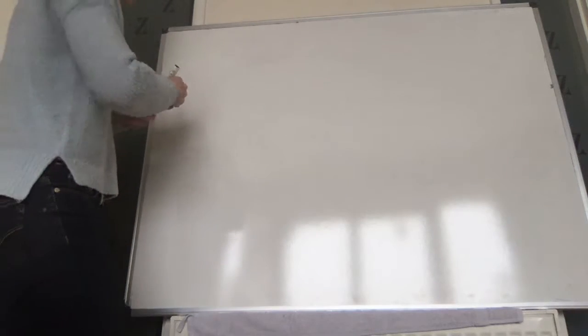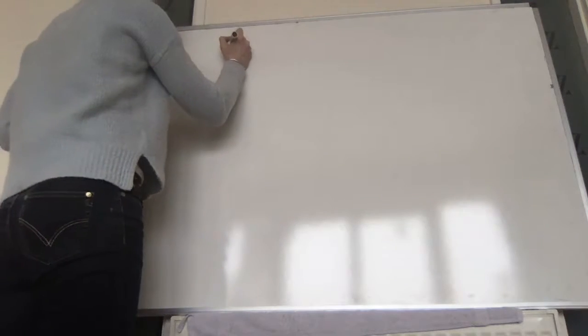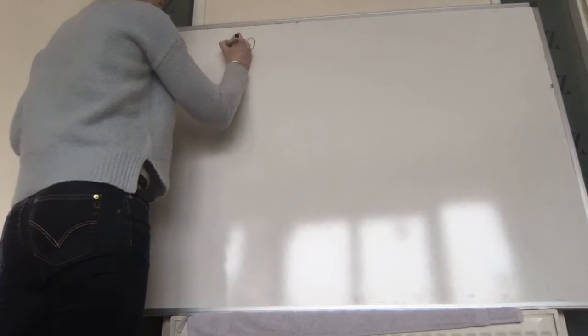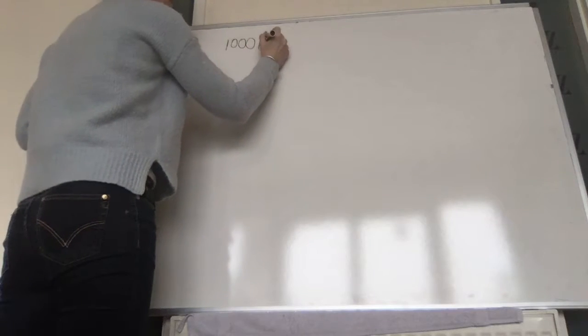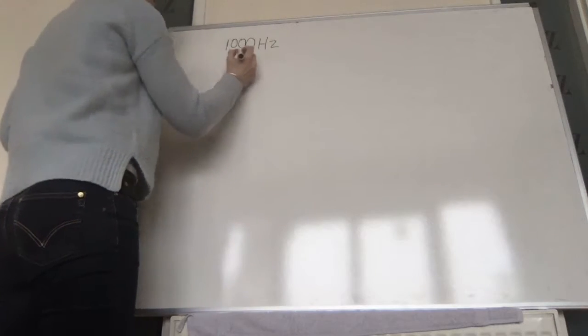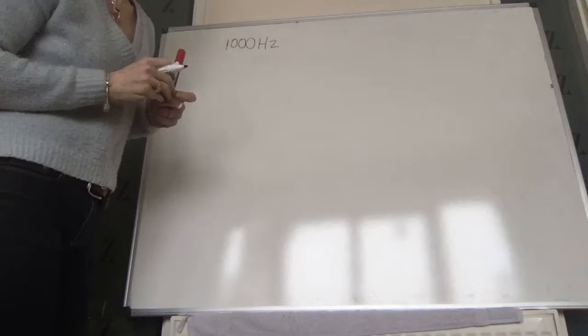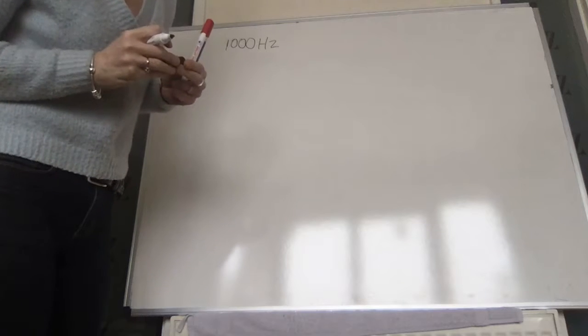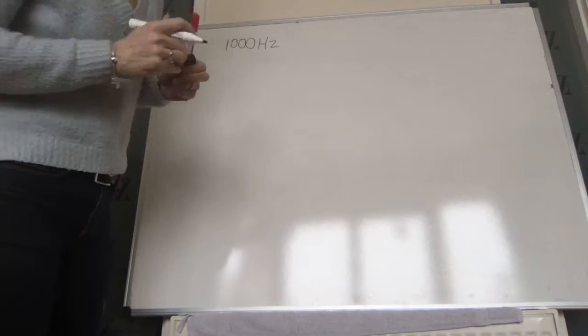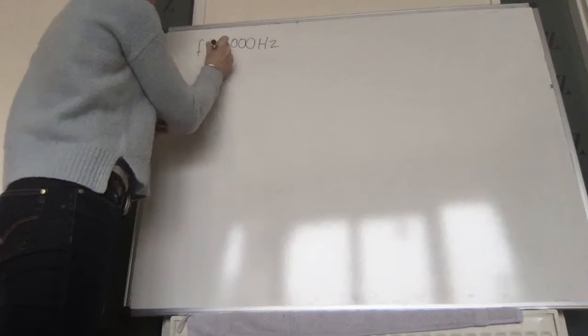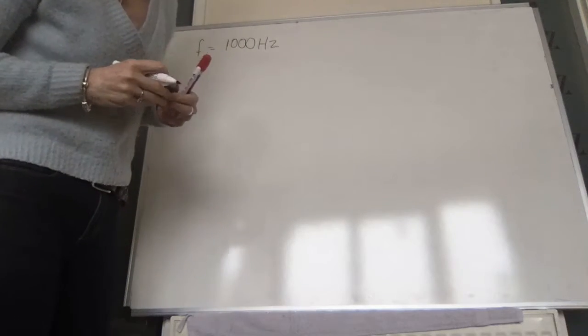1 kilohertz, by the way, is 1,000 hertz. So it's emitting a frequency of 1,000 hertz. That's the actual frequency of the siren.